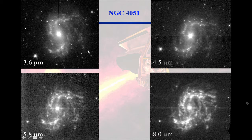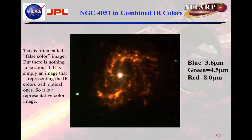We can put all of these images together and make a color image, assigning blue to the 3.6 micron channel, green to the 4.5 micron channel, and red to the 8 micron channel. You can see the stars coming out bluer and the spiral arms coming out redder because they're more dominant at the longer wavelength. This is often called a false color image, but there's nothing false about it — it's simply an image representing the infrared colors which our eyes would never see, using optical ones. So it's a representative color image.